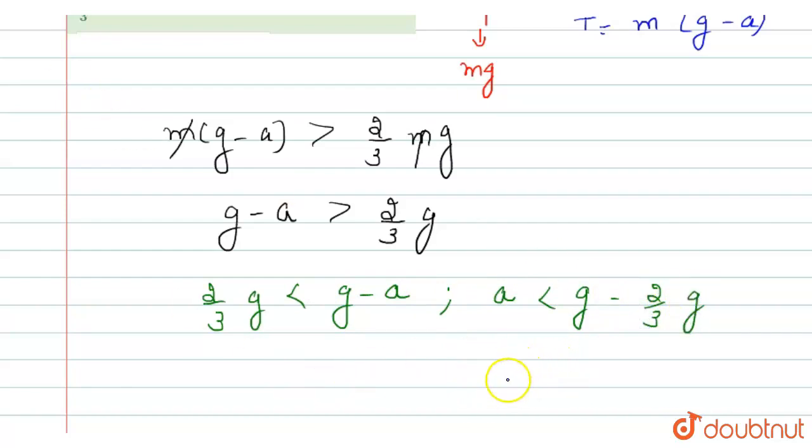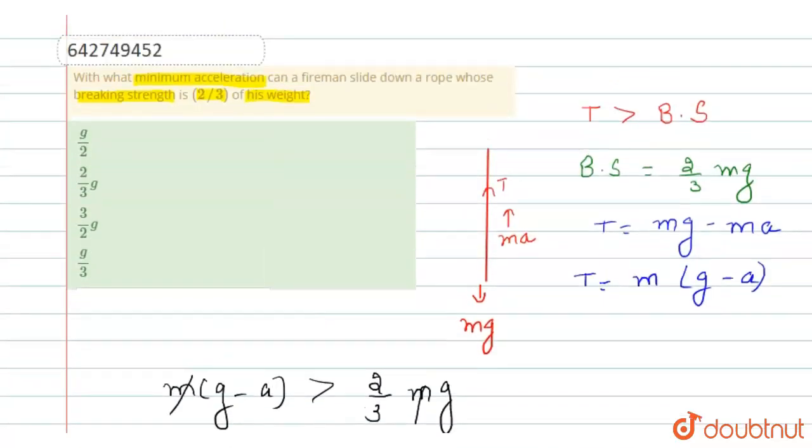From here, the acceleration is less than g by 3. So, the minimum acceleration is g by 3. Fourth option is correct.